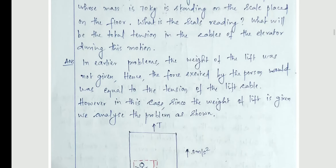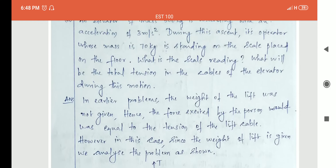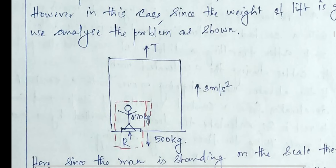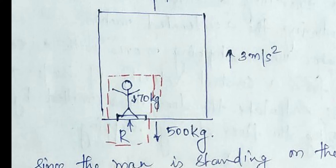This is definitely the second type of problem because two masses are given. So what we do is we draw the free body diagram. We know the lift — tension acts upward, 500 kilogram weight of the elevator acts downward, and there is a 3 meter per second square acceleration upward. Inside the lift there is a man whose mass is 70 kilogram. Since he is having contact with a surface there will definitely be a reactive force R.